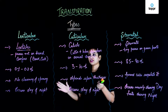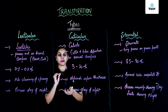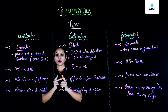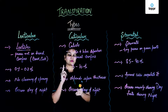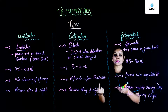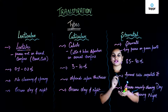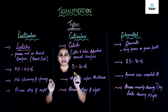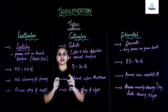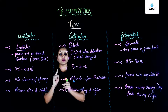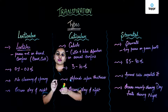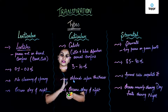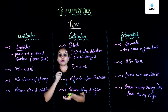Transpiration requires living cells, and water leaves the plant in the form of water vapor. However, there is one more process in which water leaves the plant in the form of water droplets — and this is called Guttation. Guttation takes place through pores present on the margins of the leaf called hydathodes. These hydathode cells are achlorophyllous, meaning they are colorless.